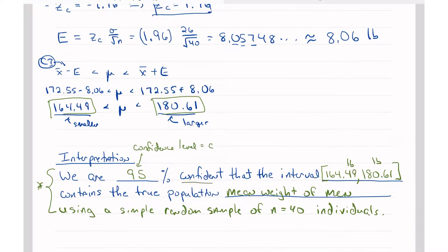So when we say confident, people understand confident. We say something in the 90 plus percent, that sounds good. So we are 95% confident that the interval, 164.49 pounds to 180.61 pounds, contains the true population mean weight of men using a simple random sample of n equals 40 individuals. That puts into common terms all of the technical things we just did to create a confidence interval.